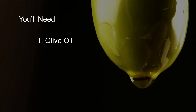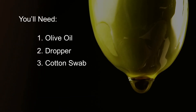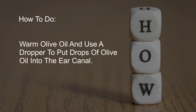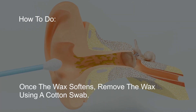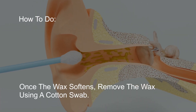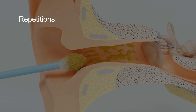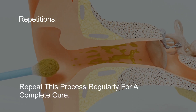You will need olive oil, a dropper, and a cotton swab. Warm the olive oil and use a dropper to put drops of olive oil into the ear canal. Leave the olive oil in the ear for about 5 to 10 minutes. Once the wax softens, remove the wax using a cotton swab. Repeat this process regularly for a complete cure.